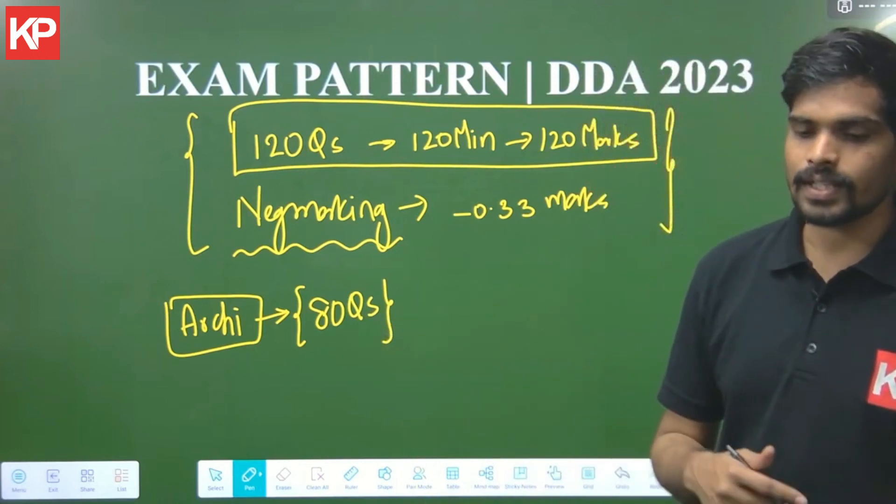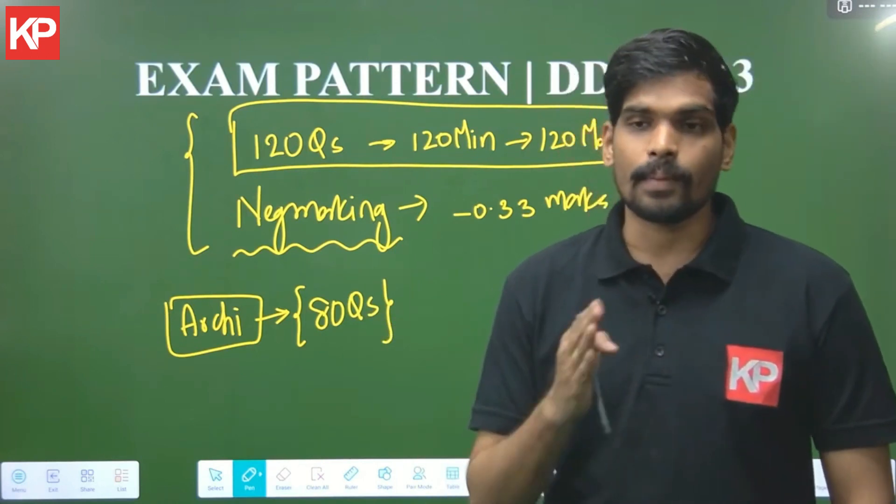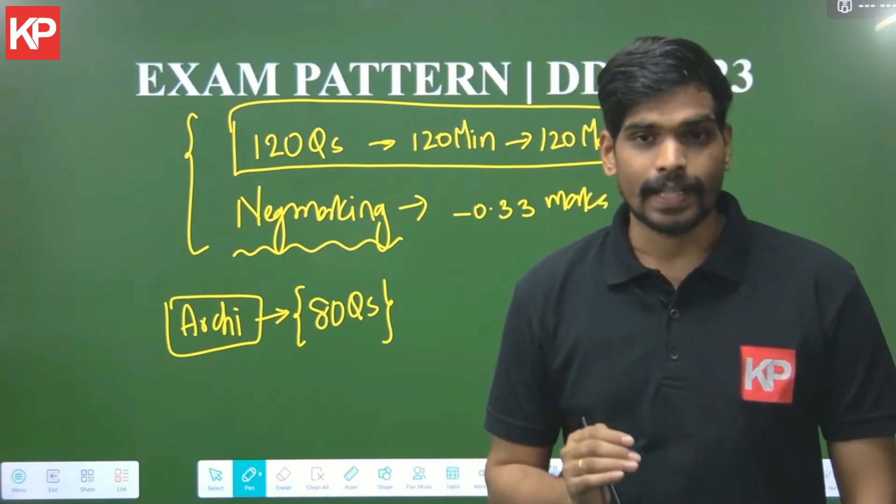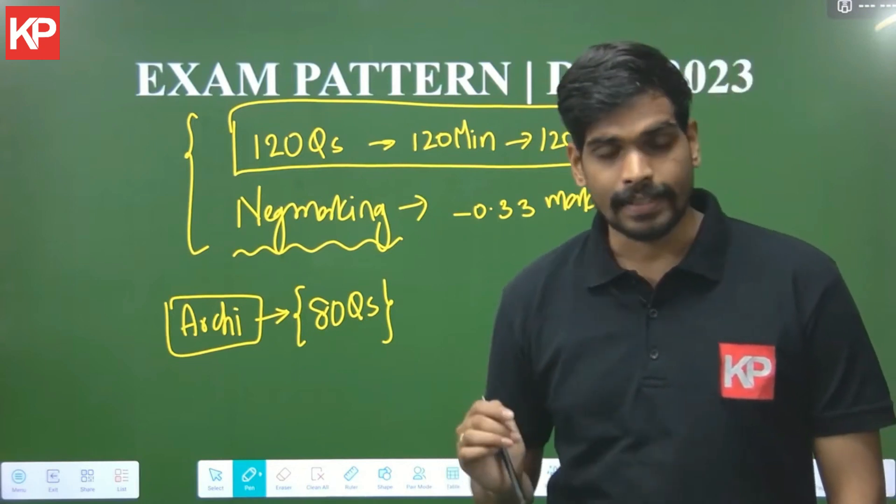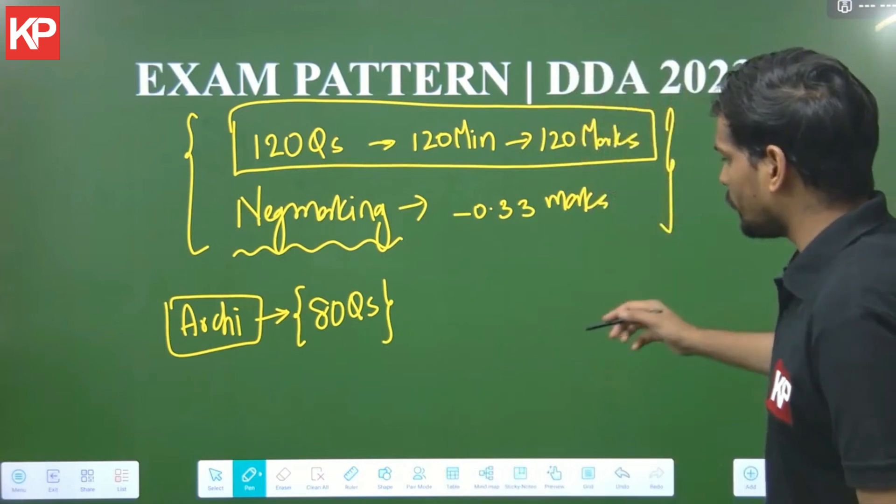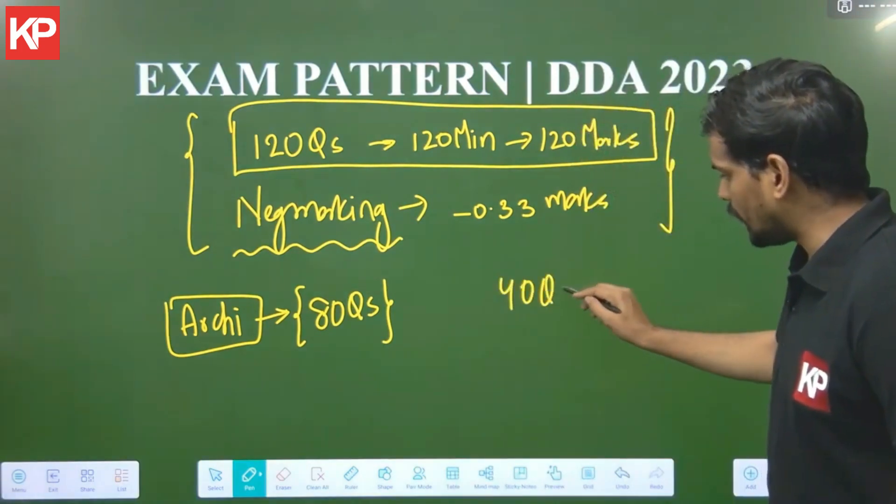The remaining 40 questions will be distributed among four topics. 10 questions will be from general awareness. 10 questions will be from quantitative aptitude. 10 questions on reasoning part and 10 questions on verbal ability or English. So the four remaining topics you will be having 40 questions.